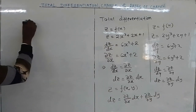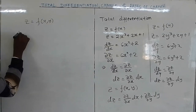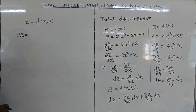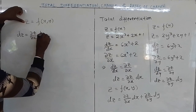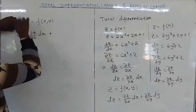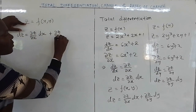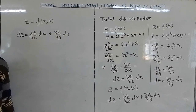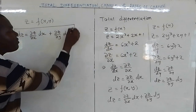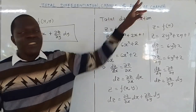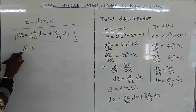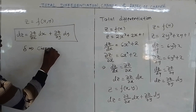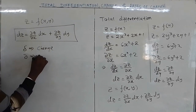If you are given z to be a function of x and y and you want the total differential dz, you differentiate z partially with respect to x and remain with dx, then add the partial derivative with respect to y times dy. This total differential is very important when you want to find the change or small change in something.